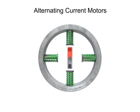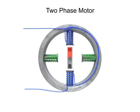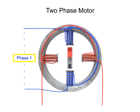This illustration of a two-phase motor has a pair of stators connected to one sinusoidal AC input, referred to as phase 1, and a pair of stators connected to a second sinusoidal AC input, referred to as phase 2.